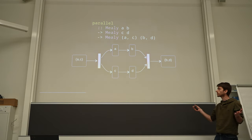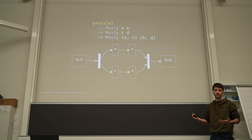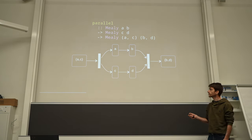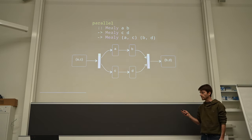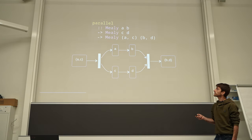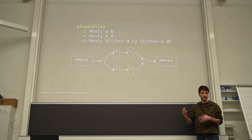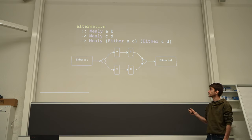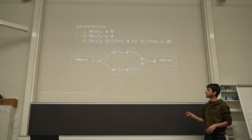But there are really many other ways you can compose such stateful processes. Suppose you have two completely unrelated machines — one going from A to B and another from C to D. You can run them in parallel: if you provide both an A and a C, you give the A to the first machine, give the C to the second machine, run both, and collect the outputs to get a B and a D. Similarly, you can run two machines alternatively — either one or the other — routing an A to the first machine or a C to the second.